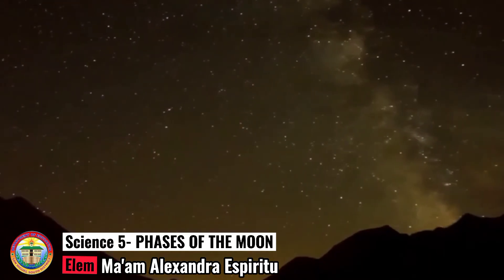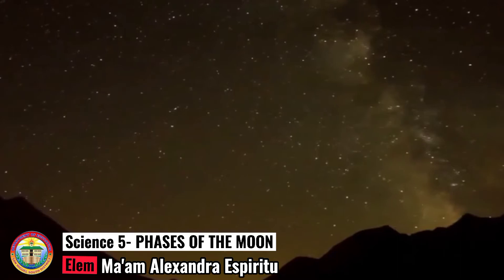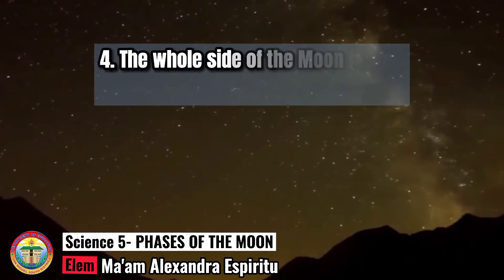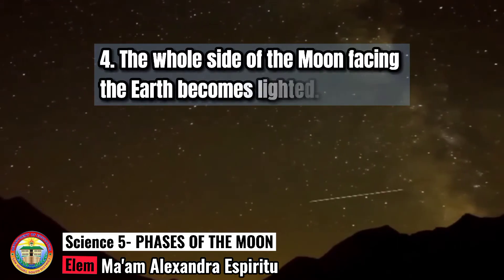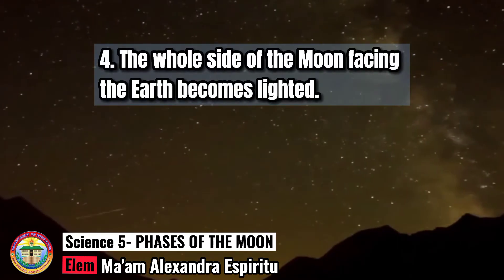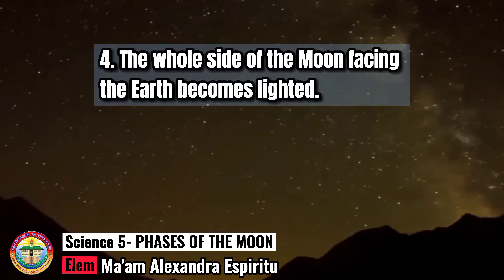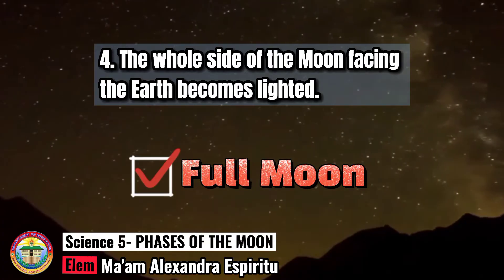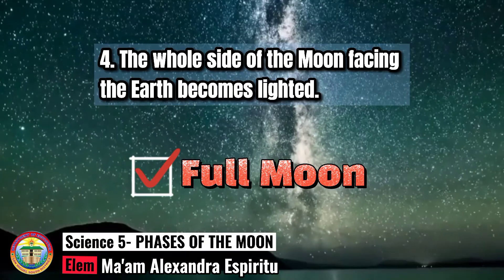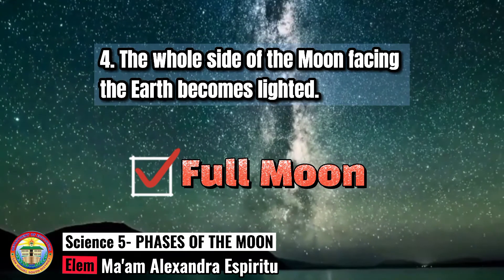Number 4: The whole side of the Moon facing the Earth becomes lighted. Full Moon. If this is your answer, then you got the correct answer.